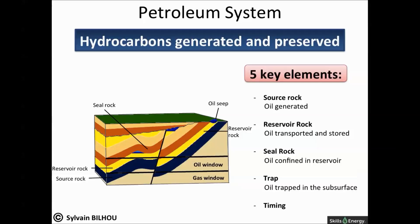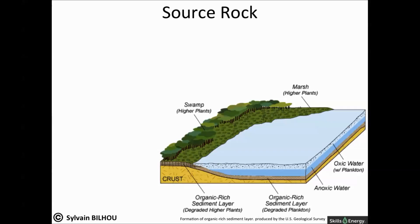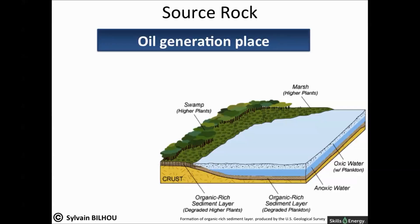I will now introduce the role and characteristics of each element of the petroleum system. Let's start by explaining what a source rock is and what its main characteristics are. As previously introduced, the role of a source rock is instrumental in a petroleum system, as it is the generative place of the hydrocarbons that charge a sedimentary basin.